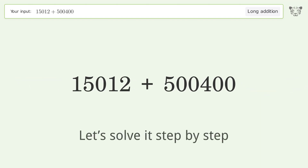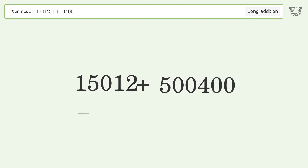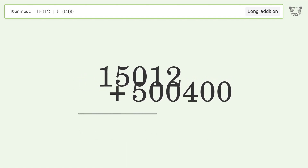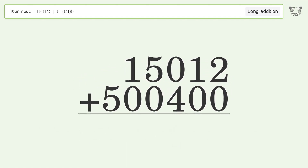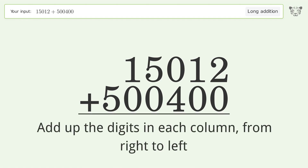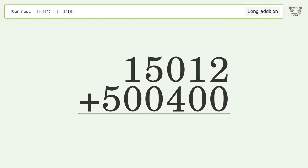Let's solve it step by step. Rewrite the numbers from top to bottom, aligned by their place values. Add up the digits in each column from right to left. 2 plus 0 equals 2.